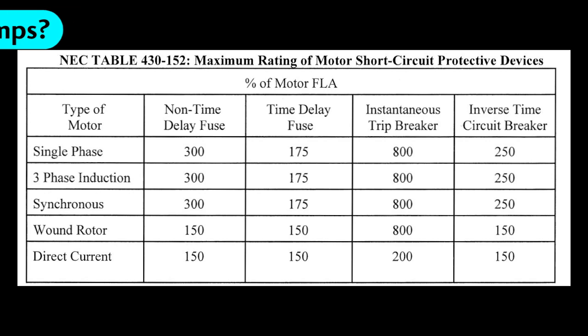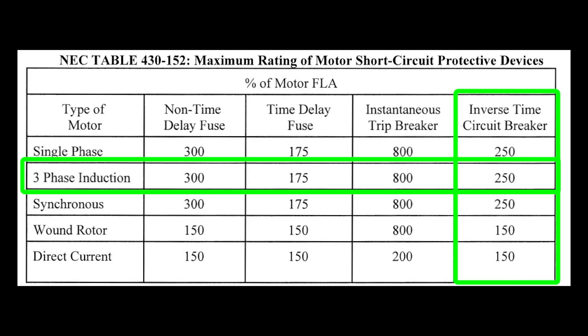Sizing a circuit breaker for use with a motor is easy. In the US, you just go to Table 430-152 of the National Electric Code and look up the answer. For motors, you want to use this inverse time breaker column which says size the breaker at 250% of the motor's full load amperage.